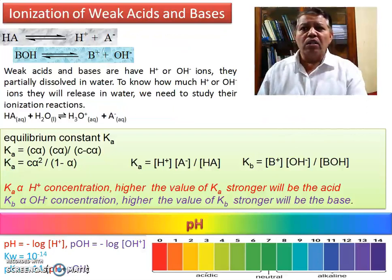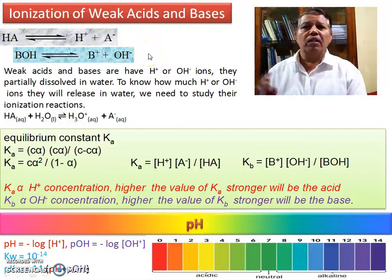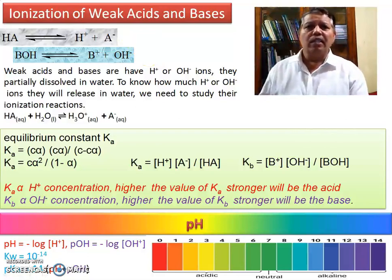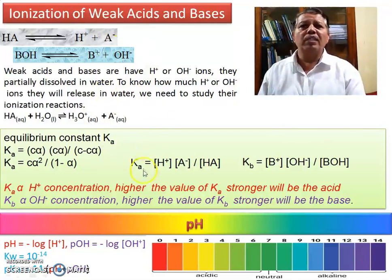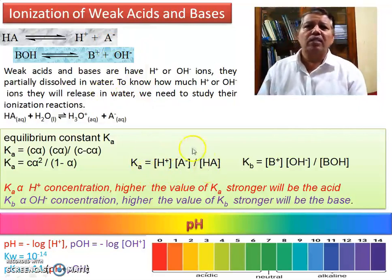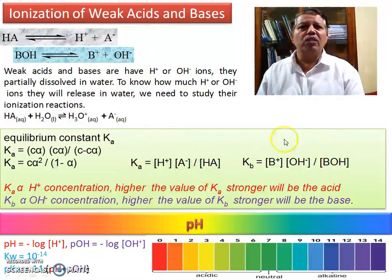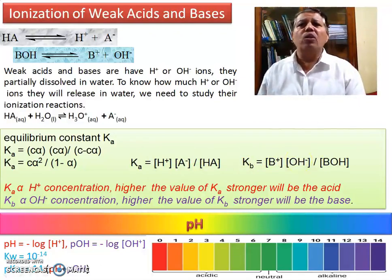When water dissociates, weak acid or weak base, when dissociating into their ions, the equilibrium constant for a weak acid Ka equals the concentration of H⁺ times concentration of A⁻ divided by concentration of HA. Similarly, there is Kb for a weak base. The value of Ka is directly proportional to the concentration of hydrogen ion and Kb is directly proportional to the concentration of OH⁻ ion. Therefore, the higher the value of Ka, the stronger the acid; and higher the value of Kb, the stronger the base.